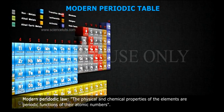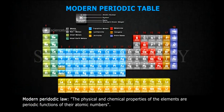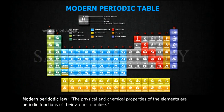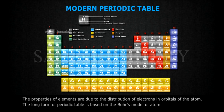Modern Periodic Law: The physical and chemical properties of the elements are periodic functions of their atomic numbers. The properties of elements are due to the distribution of electrons in orbitals of the atom.